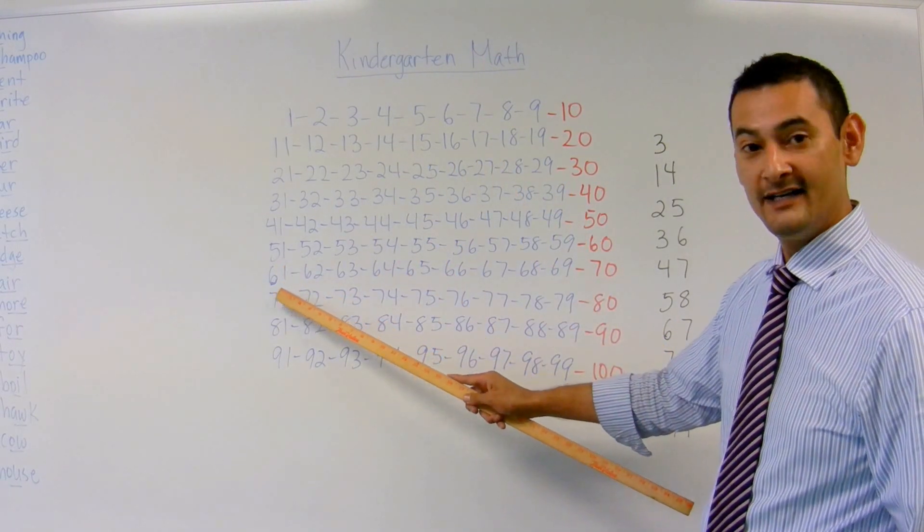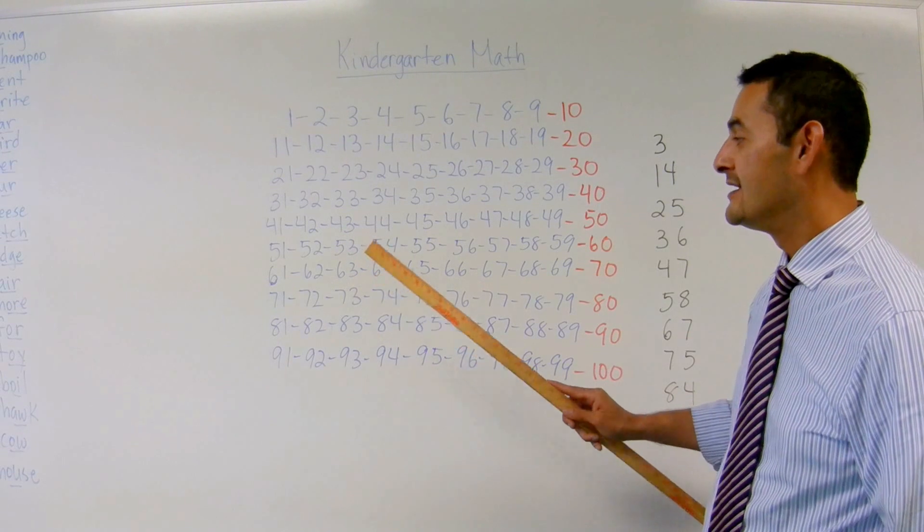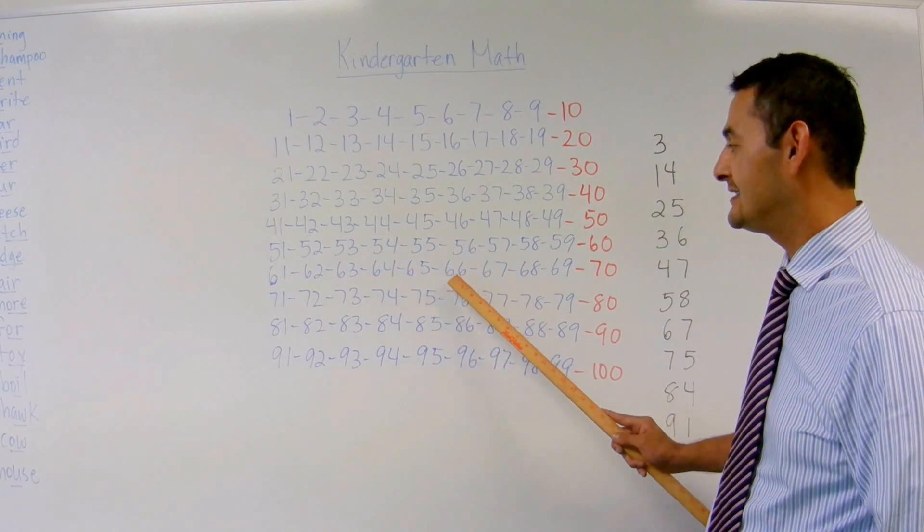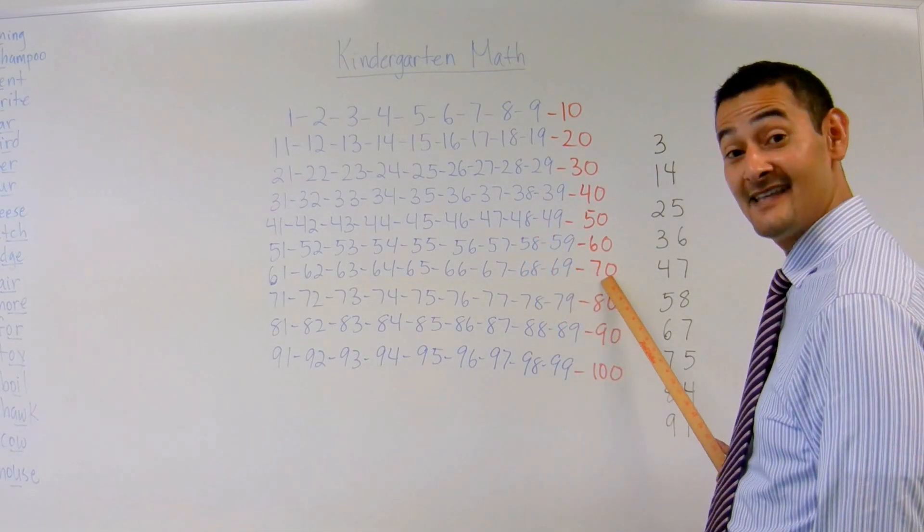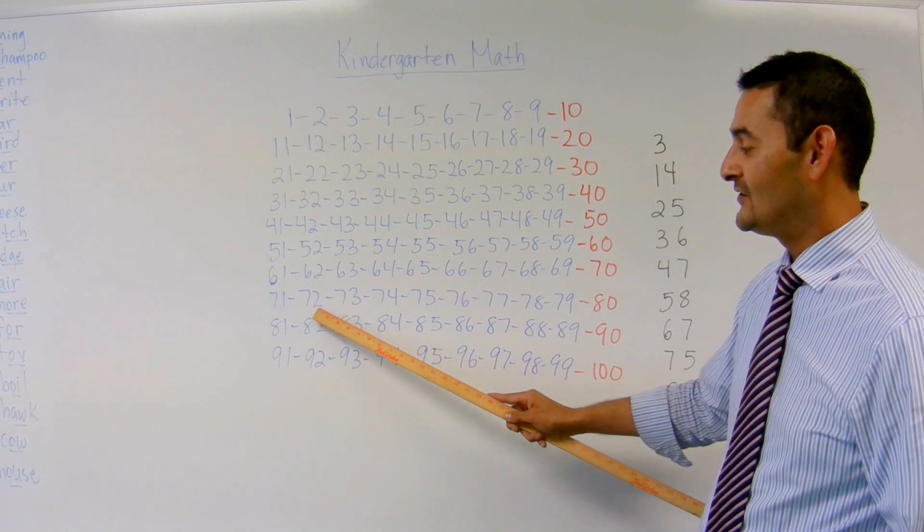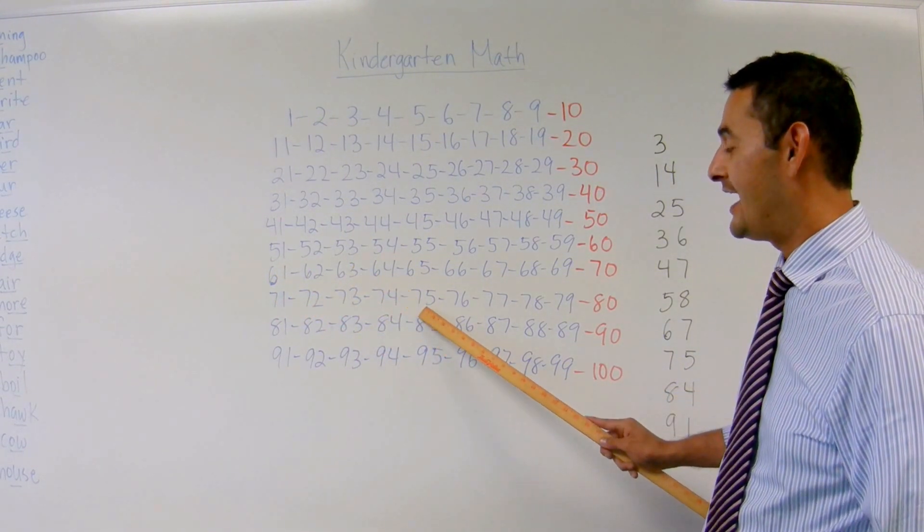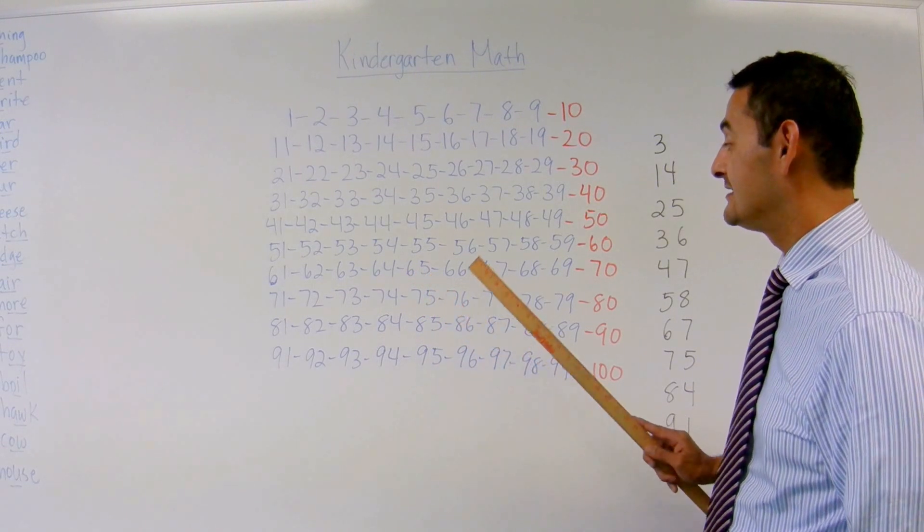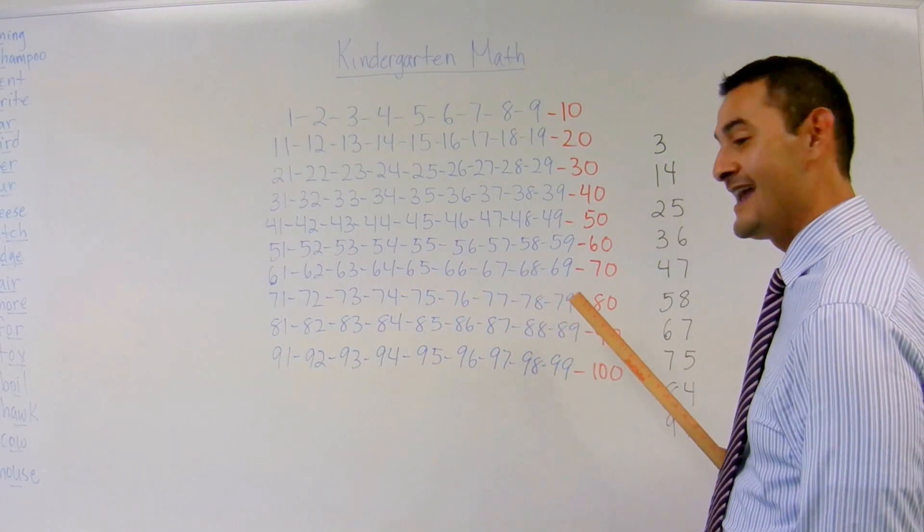61, 62, 63, 64, 65, 66, 67, 68, 69, 70. 71, 72, 73, 74, 75, 76, 67, 78, 79, 80.